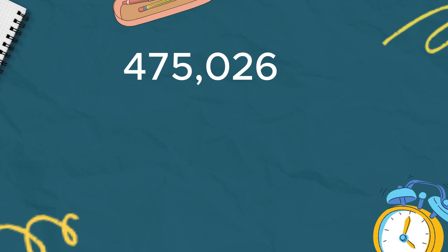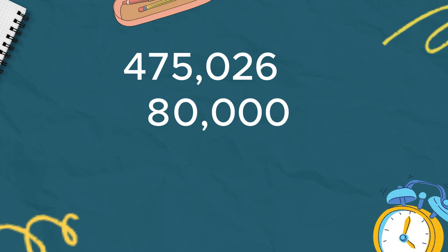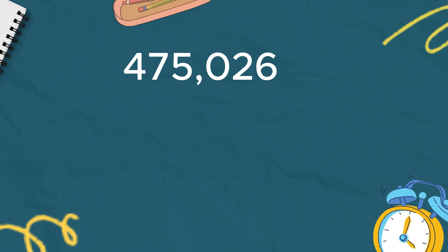What if you round this number to 10,000? The same rules apply: check the rounding digit and the digit to its right. The rounding digit in the ten thousands place is 7, and the digit to its right is 5. Since 5 is 5 or more, we round up — increase the rounding digit by 1 and change all digits to the right to 0. The rounding digit becomes 8. Don't forget to copy the leading digits. So 475,026 rounded to 10,000 is 480,000.